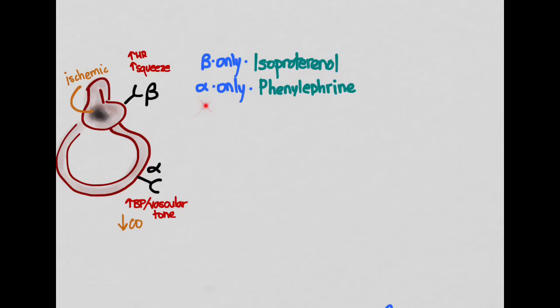Now if you want to give alpha only, you'd use a drug like phenylephrine. That's alpha only, giving you a lot of peripheral squeeze. It's going to make the blood pressure go up. Chances are you're not going to use this either. So what would you use?